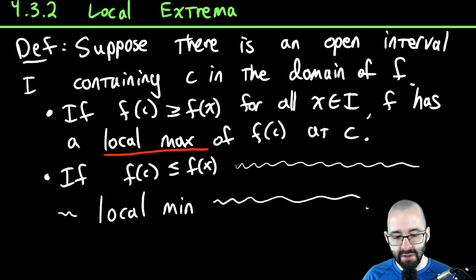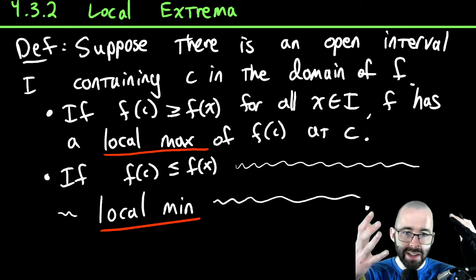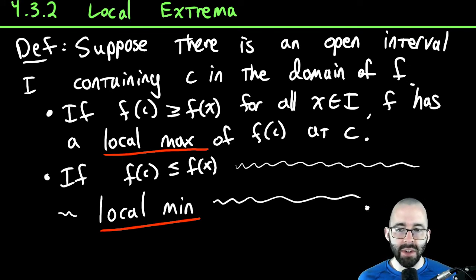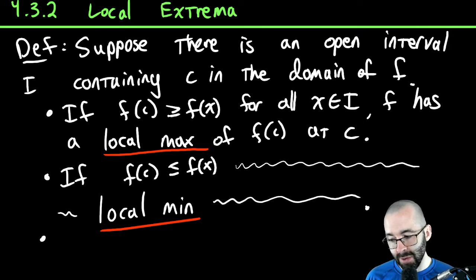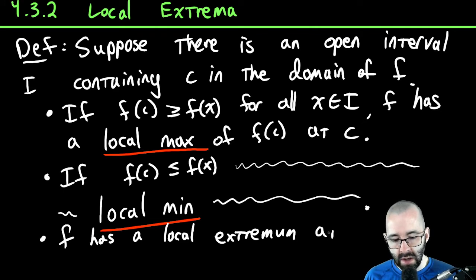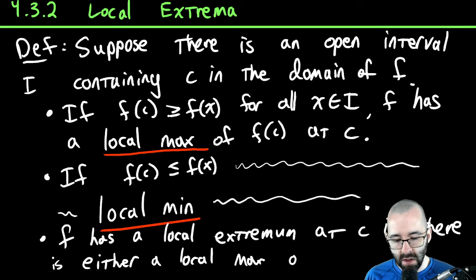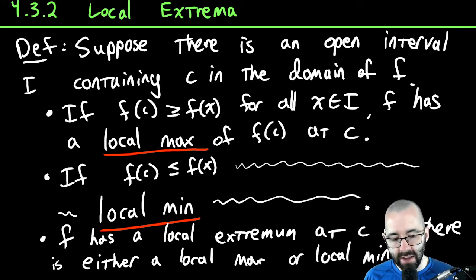The local minimum is that same function value at that same location. So it's a local max if it's the biggest in that little interval, and a local minimum if it's the smallest in that little interval. And then finally, f has a local extremum if there is either a local max or a local min at that point.